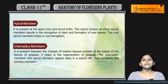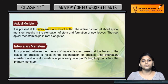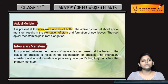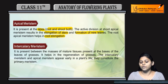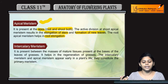Coming to apical meristem — apical meristem kahaan present hota hai? Apex pe, chahe woh root ki apex ho ya shoot ki apex ho. Function kya hai iska? Apical meristem elongation of stem and elongation of root kerta hai. It also helps in the formation of new leaves. So apical meristem elongation kerta hai — length baData hai ya height baData hai.